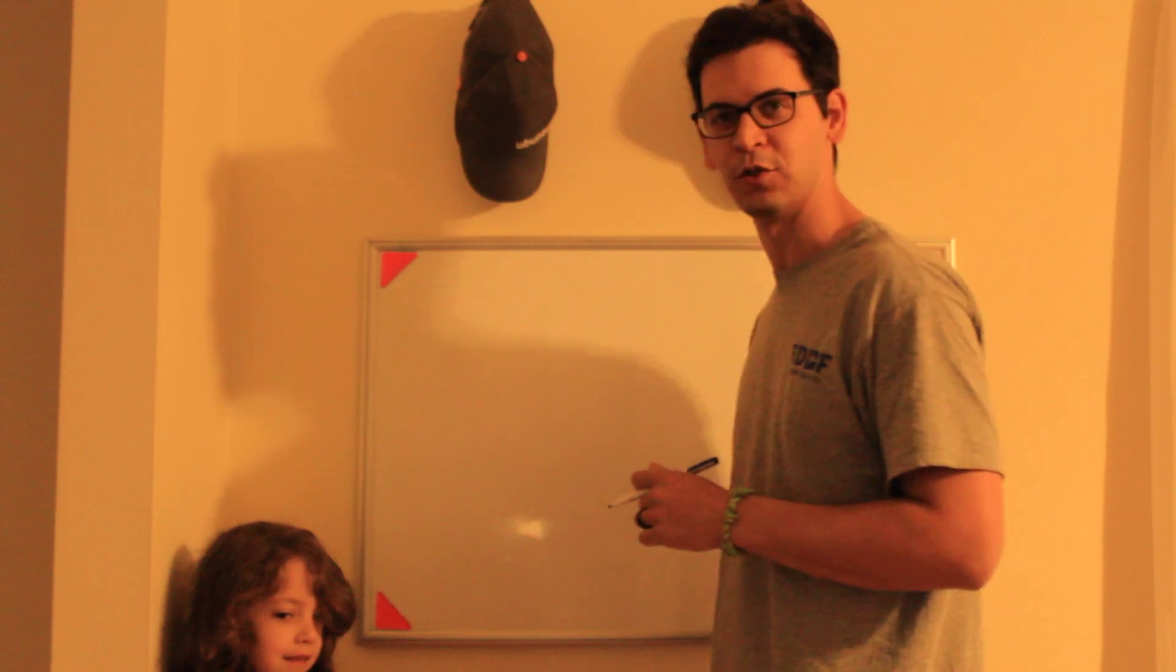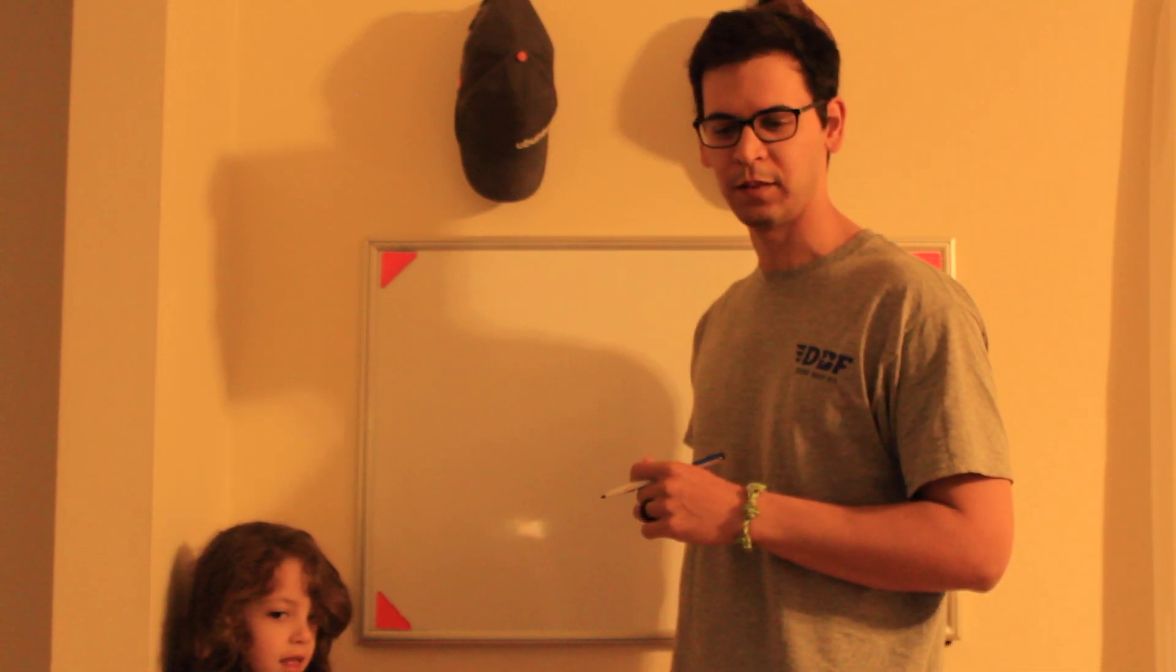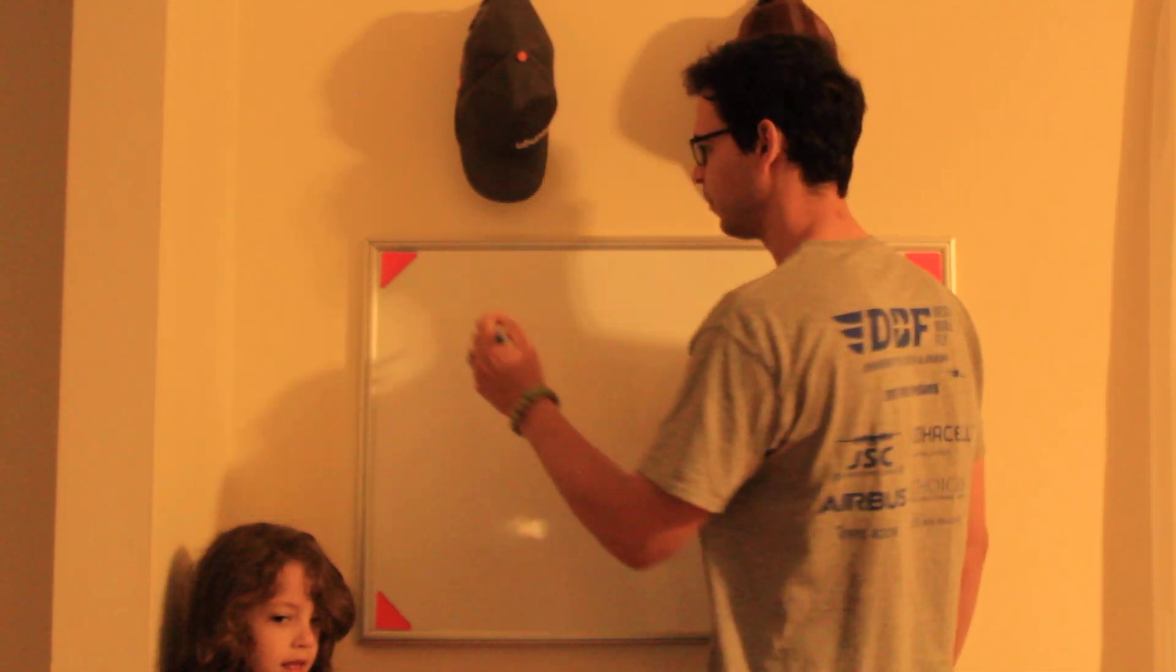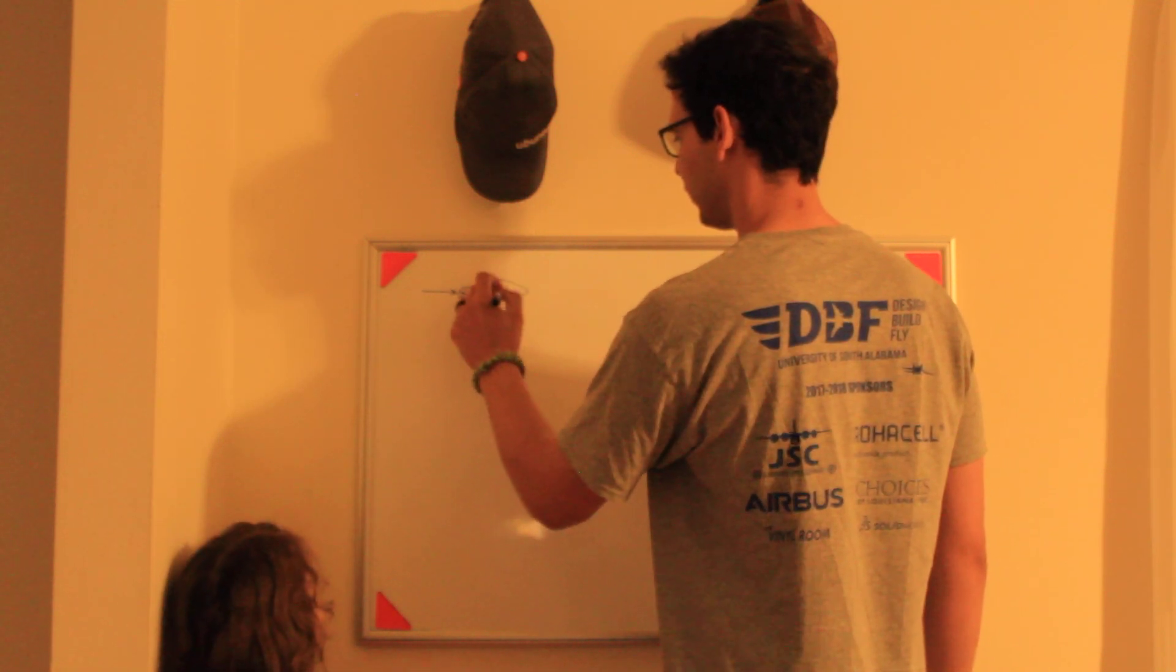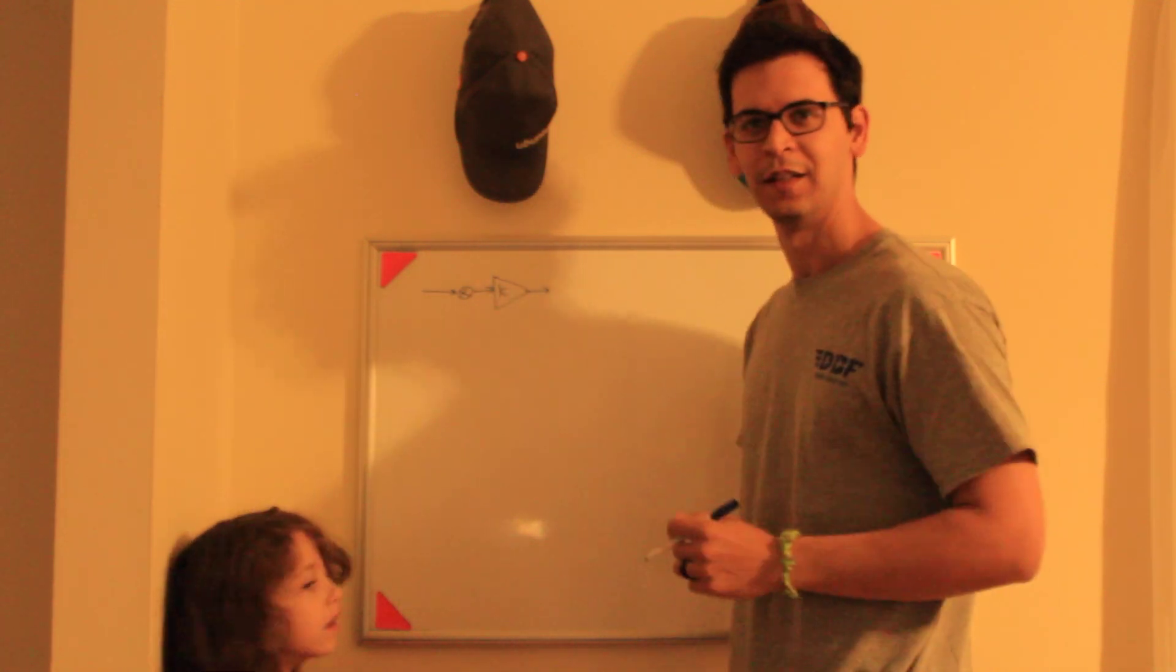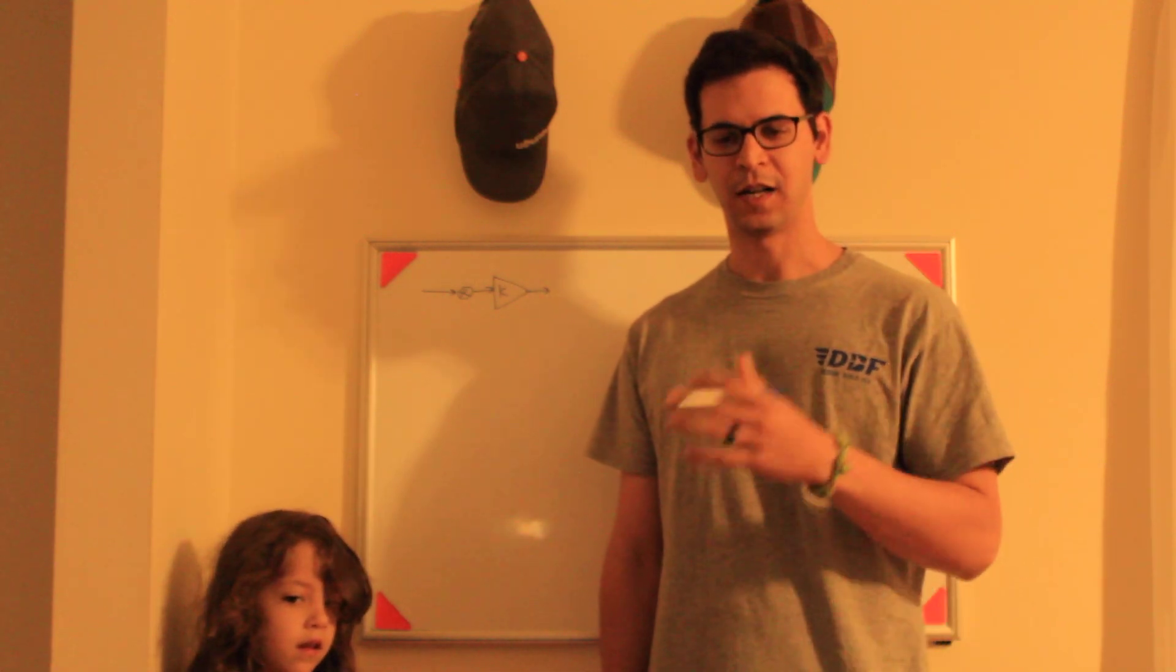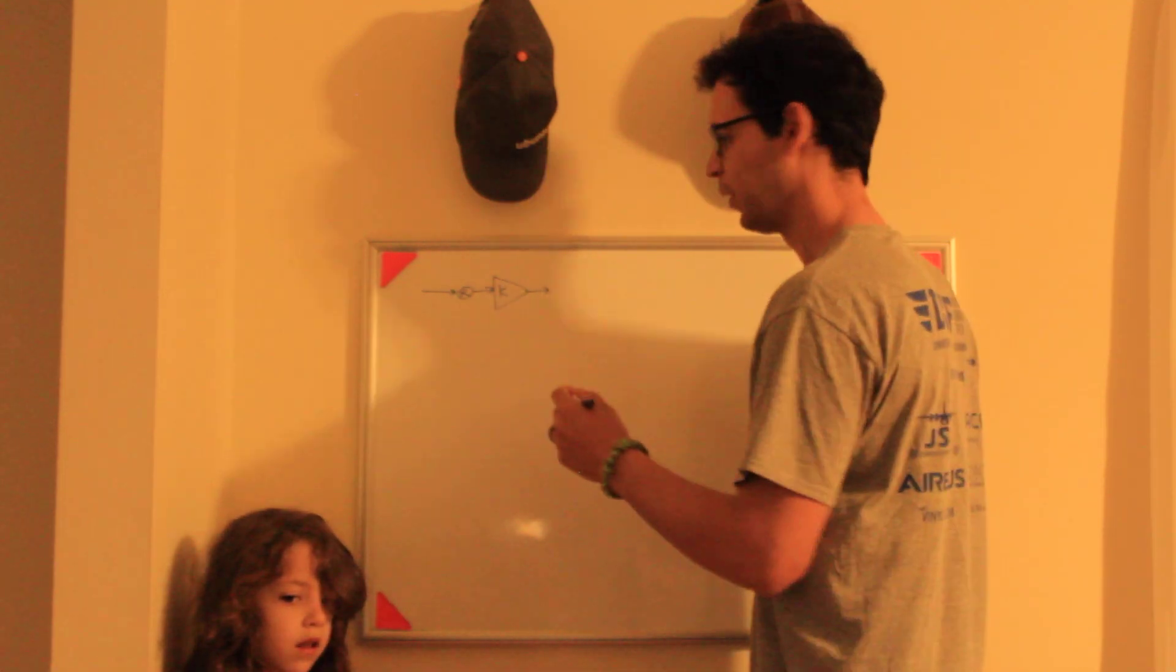Welcome to this example program on control systems. We're going to set up a block diagram with a proportional gain K. I need to talk to the camera, but I'm going to draw the block diagram here and then discuss it.